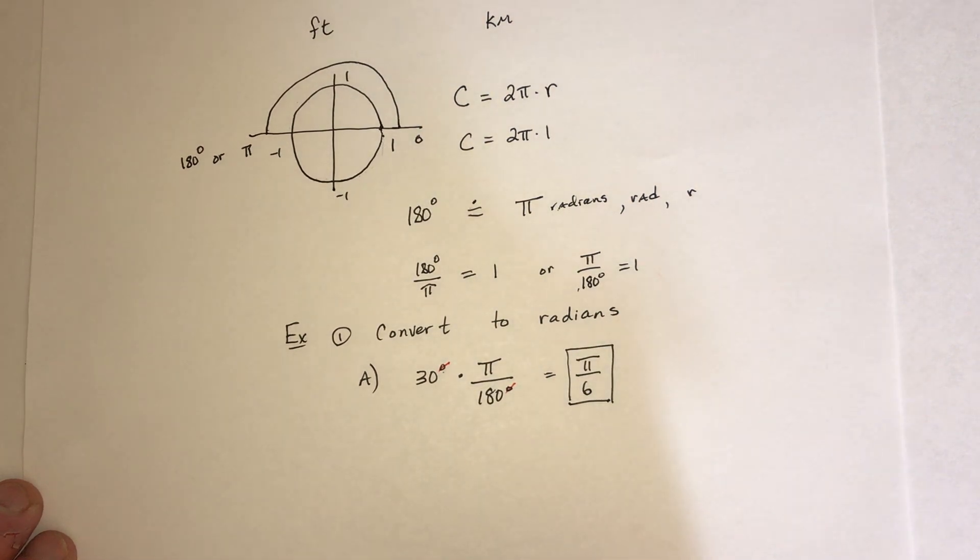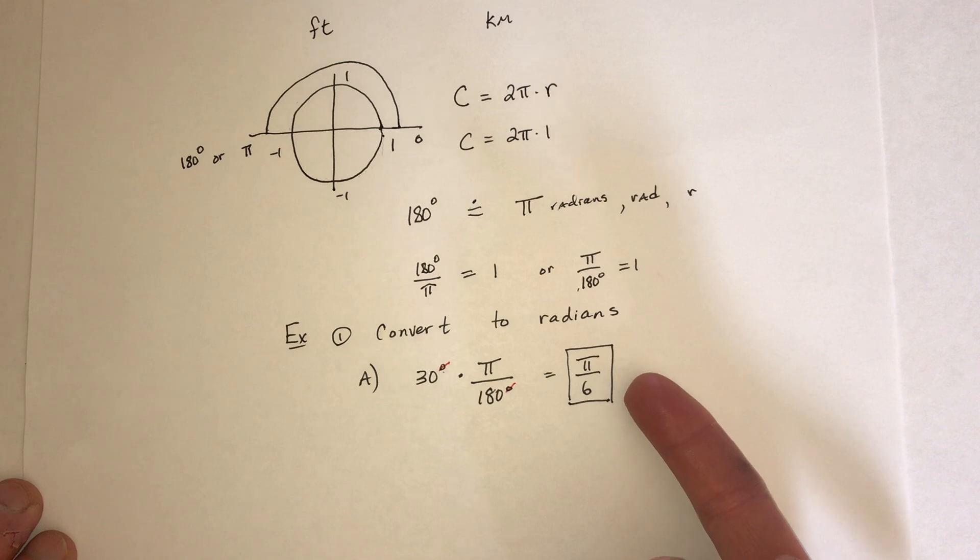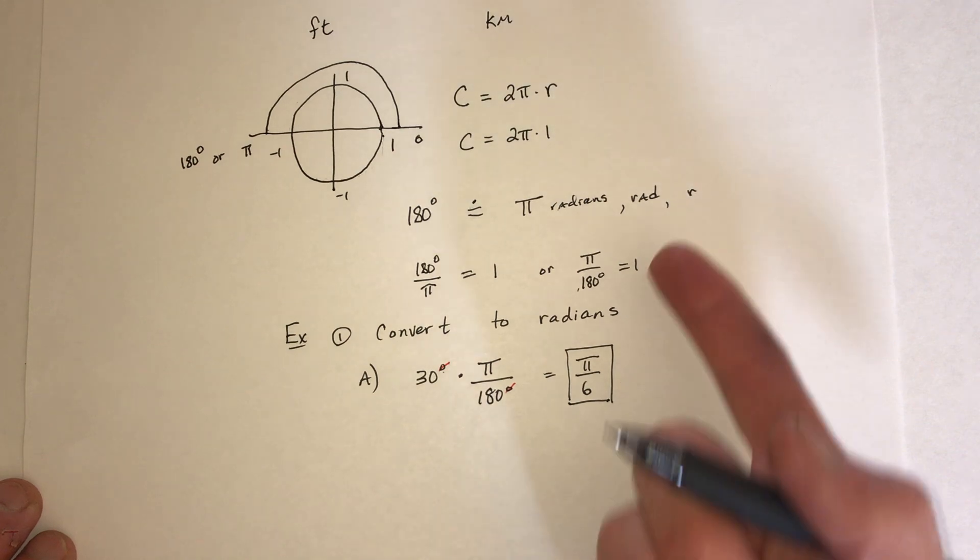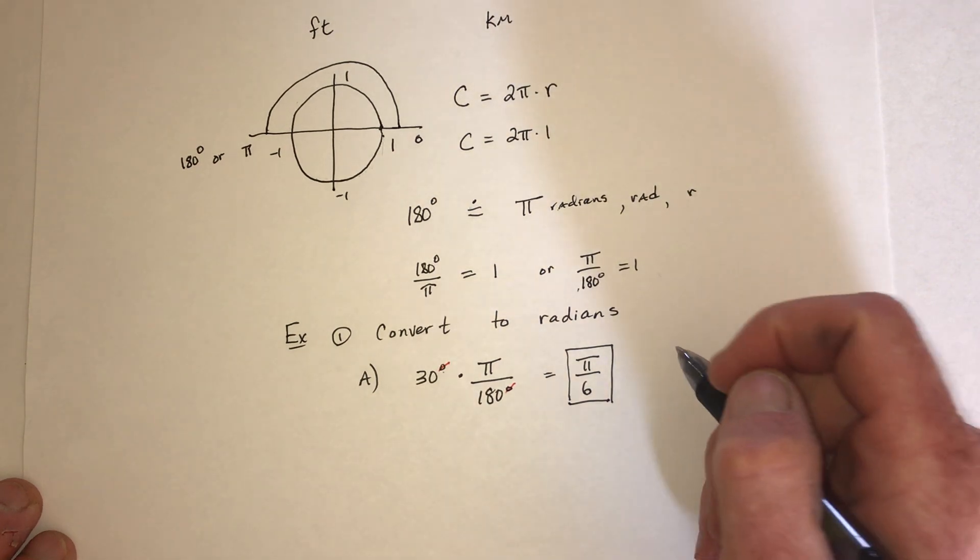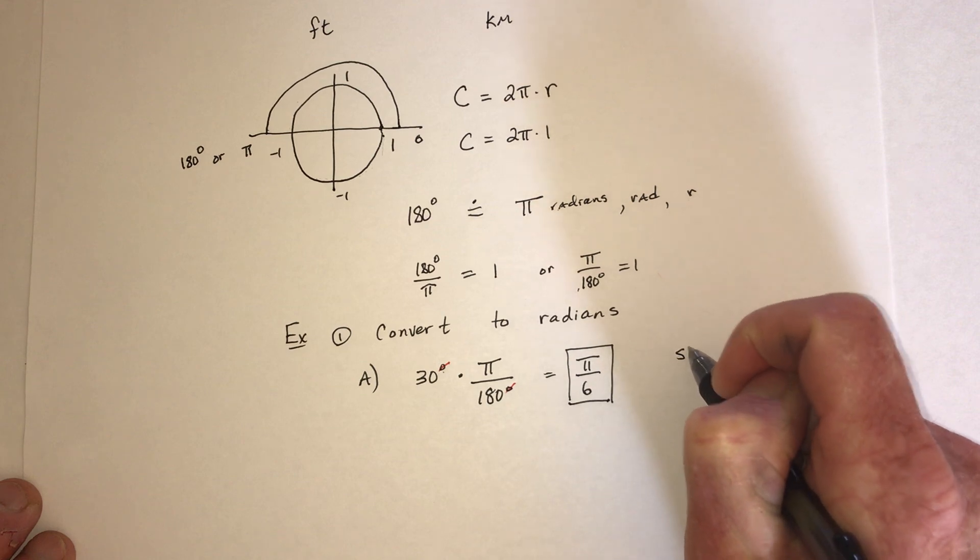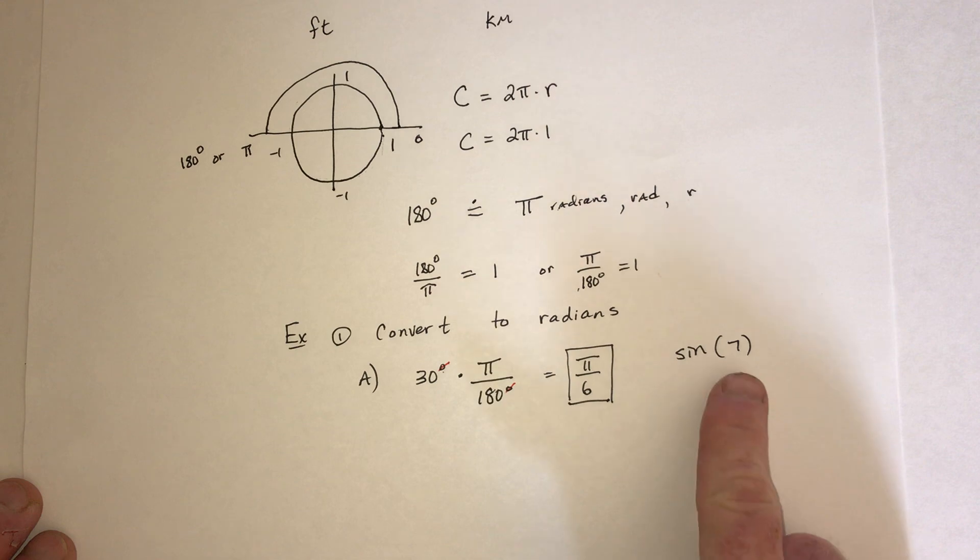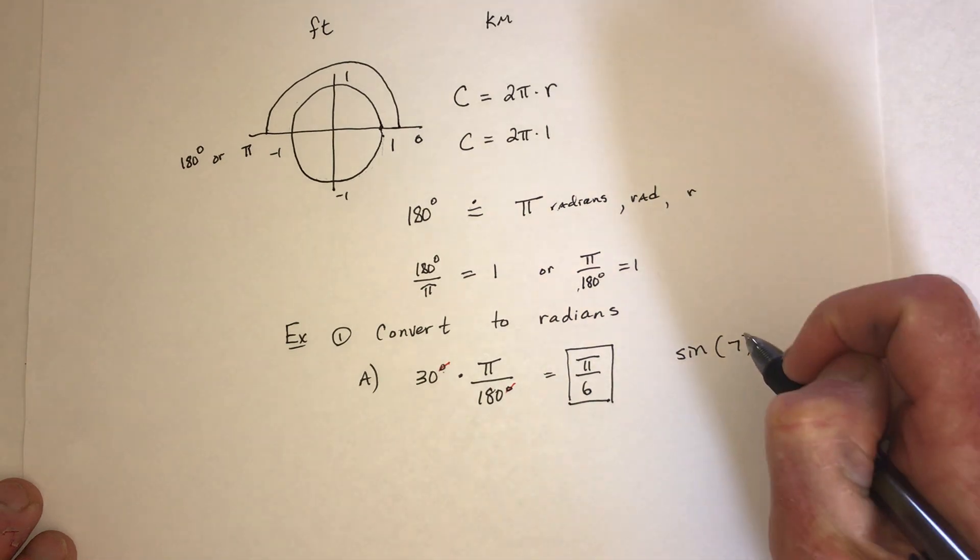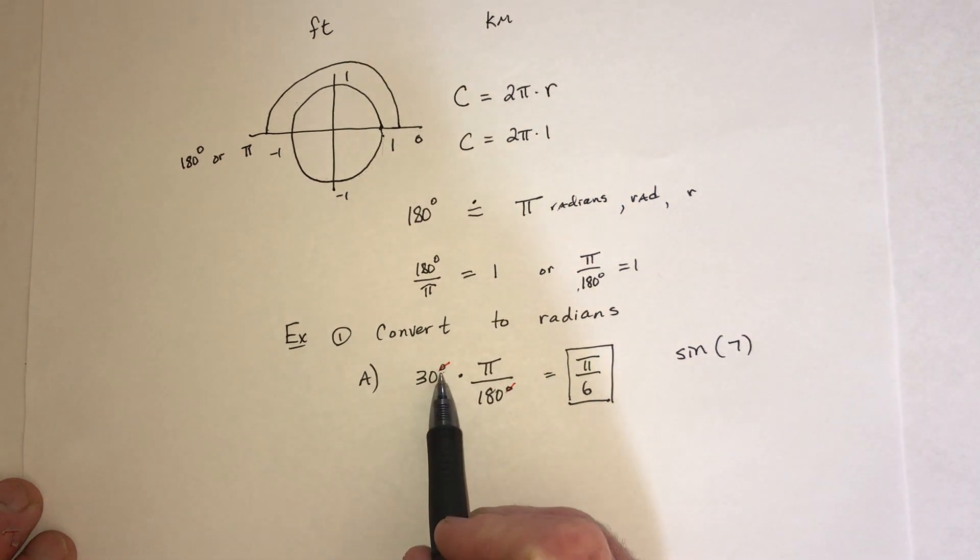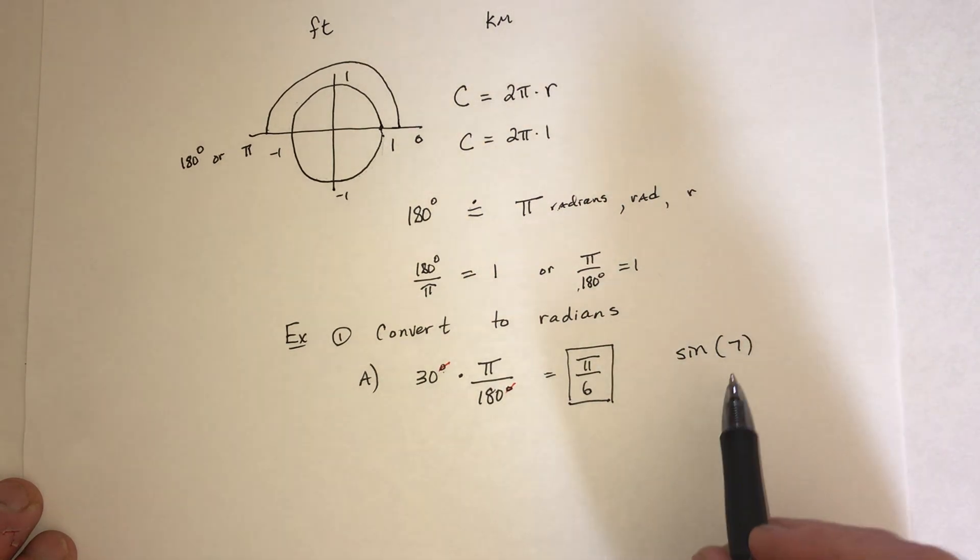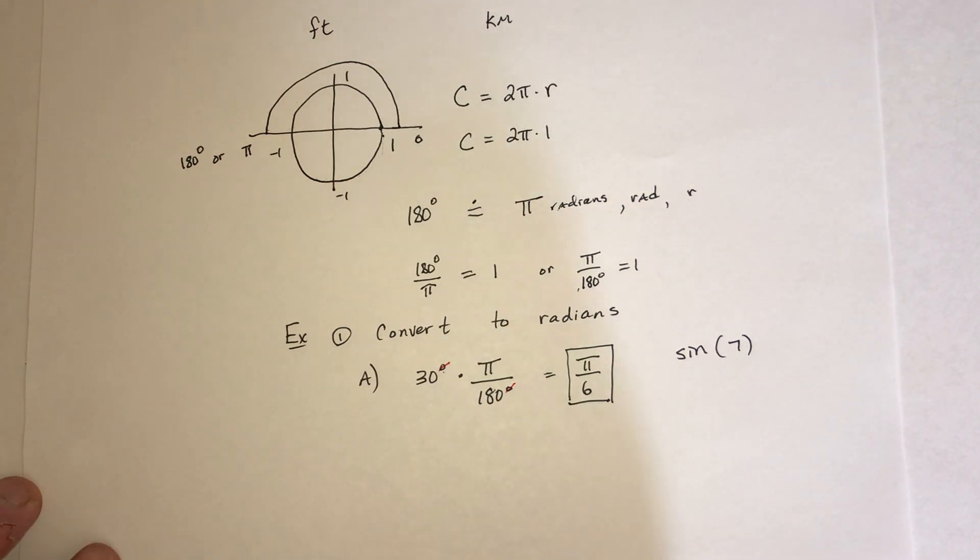Now, an important note is, you don't have to write the word radians, or rad, or r. So for example, if it said, hey, I want you to find sine of 7. Is that in radians or degrees? You're right, that's in radians. If it had a little circle above the 7, like this 30 degrees did, then that's in degrees. But if it doesn't have anything, then it's understood to be in radians by default.